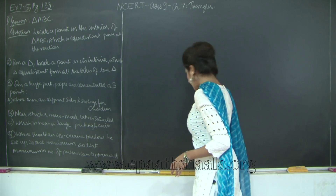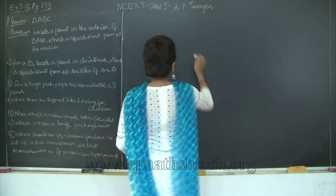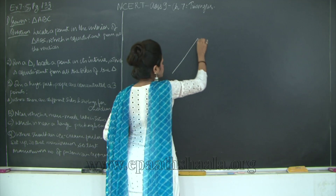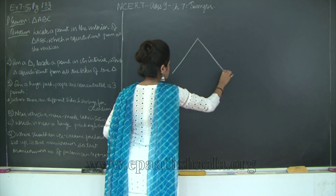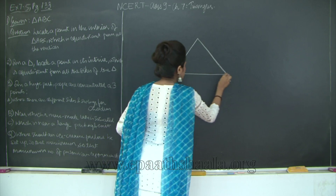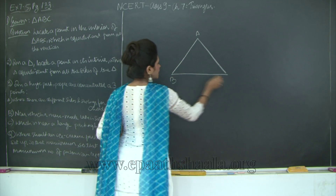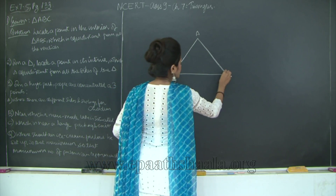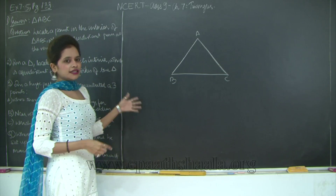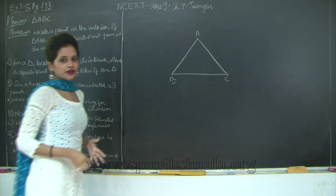What they have given is: we have a triangle ABC. So what we will do is we will draw a triangle ABC. It could be any sort of triangle. I have just taken an acute angle triangle. You could take an obtuse angle triangle or a right angle triangle.